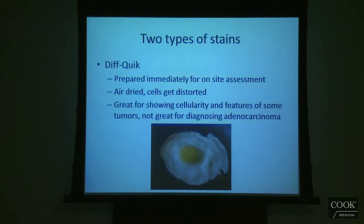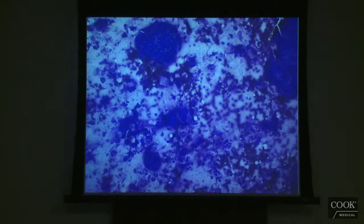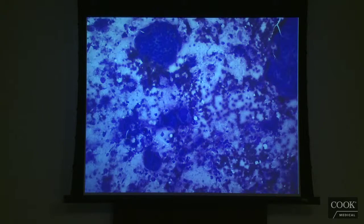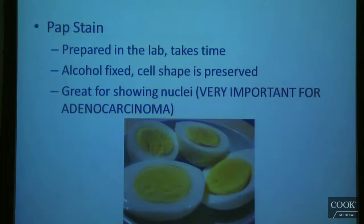The advantage of the diff-quick is that it's really quick and we can get a quick look. The drawback is that even though you can see the cellularity and some features of the tumor very well, the morphology is not great — it's fair to good, but not great. Some detail is sort of lost when you do it this way. You can make the analogy to frying an egg: when we dry these cells out they sort of flatten and blow up. It's still an egg and you can tell it's an egg, but it's not the same round thing you started out with — it's sort of distorted. Here's an example: here's a cancer cell and you can see it's sort of blown up — you can tell it's an abnormal cell, but it's really hard to see the detail of the cell.